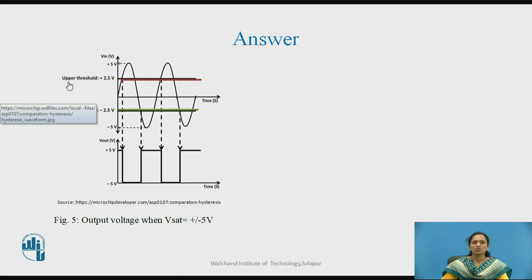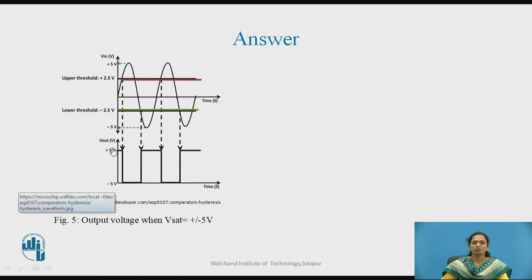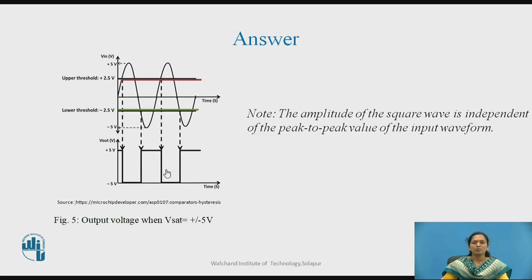The threshold voltages are +2.5 V and −2.5 V respectively for positive and negative values. The output voltage will swing between +5 V and −5 V, since we are biasing the op-amp between ±5 V. The transitions will be +5 V to −5 V and −5 V to +5 V. Very importantly, the amplitude of the square wave is independent of the peak-to-peak value of the input waveform.